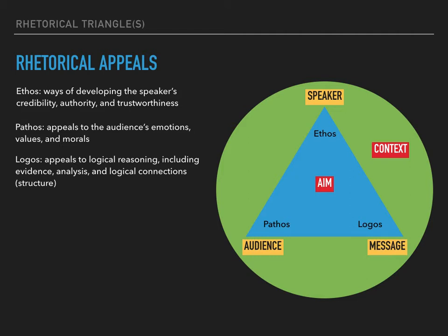The fourth type of rhetorical appeal is the most nebulous, and that is kairos. Kairos literally means timeliness, and it's about the appropriateness of the purpose or aim, the message, or appeals to a particular moment in time or to a particular aspect of the context. When we say a message or speech is timely, that's what we're invoking.